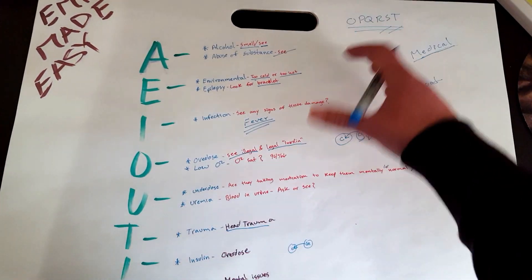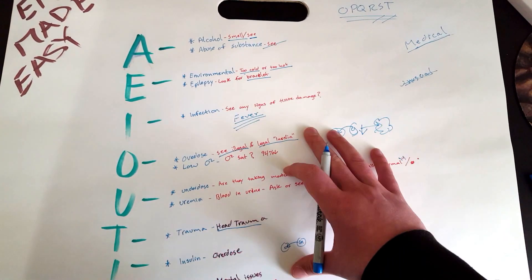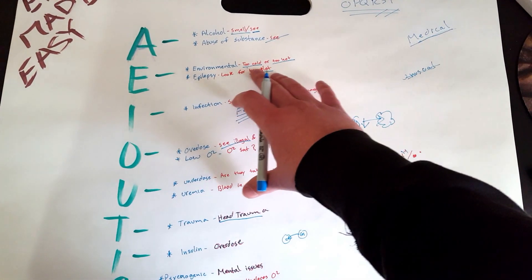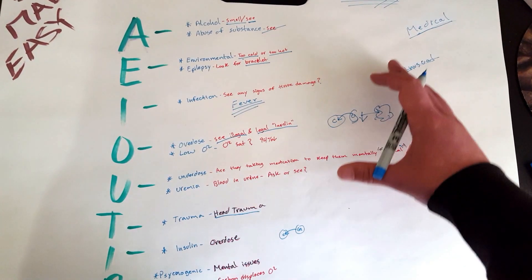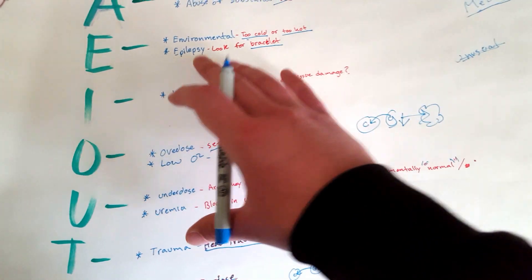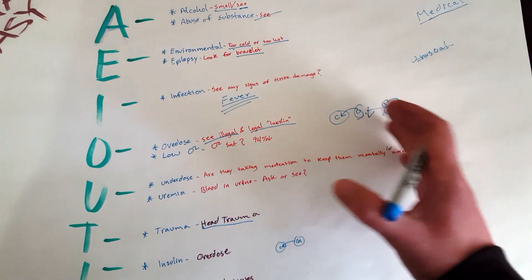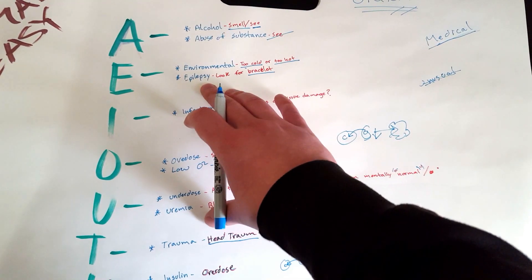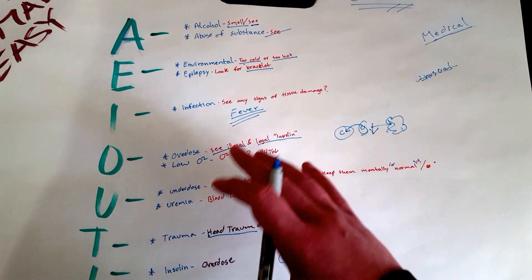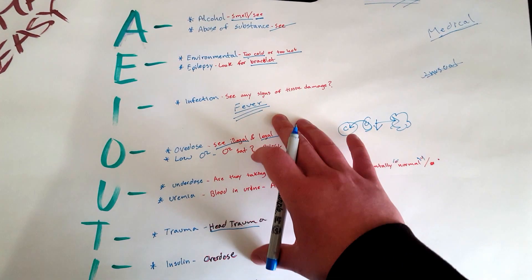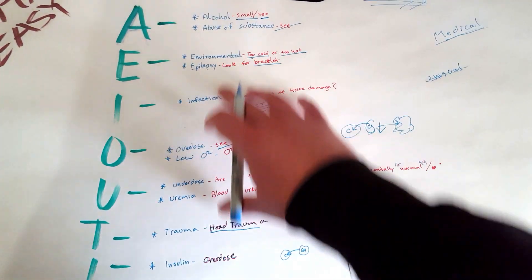Just ask: Do I smell any alcohol? Do I see any containers? Are there any needles nearby, any kind of illegal drugs, a glass pipe? Was my patient extricated out of a cold environment or out of a hot environment? Are they in heat stroke, right? Epilepsy: Do I see a bracelet that may indicate that my patient has epilepsy? Is there anybody that can tell me their medical history to know if they do have epilepsy? Infection: Do I see any tissue damage, any kind of severe infection on my patient?